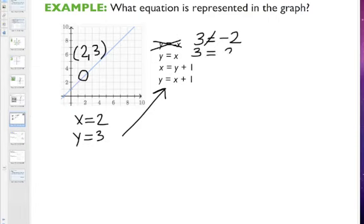In the next one, y is 3 equal to x. Well, 3 does not equal 2, so it can't be that equation. In this one, x is 2, y is 3, 2 is not equal to 3 plus 1. So it can't be this equation.